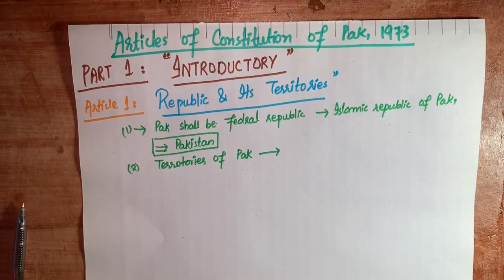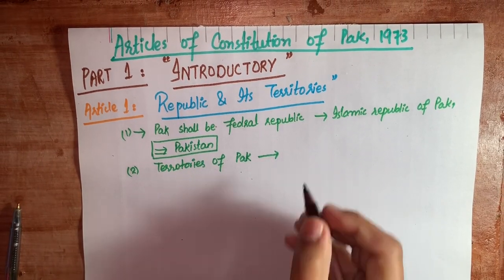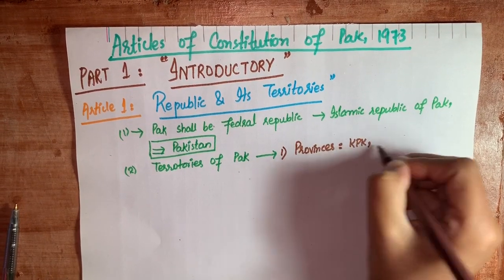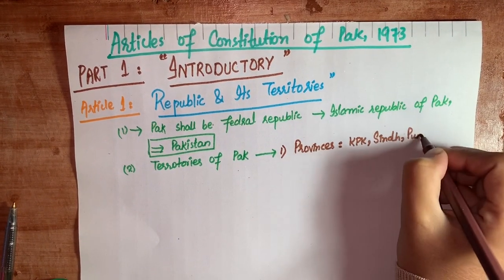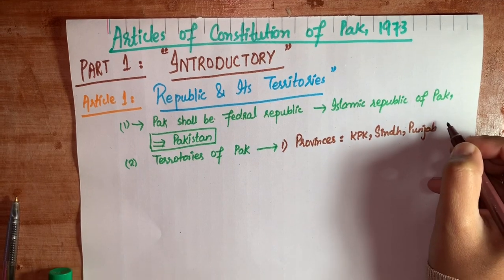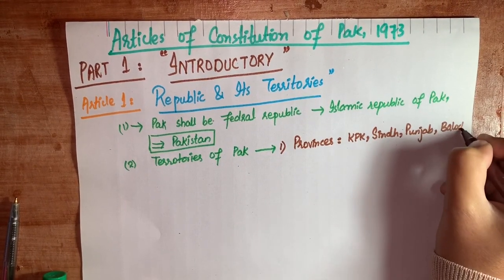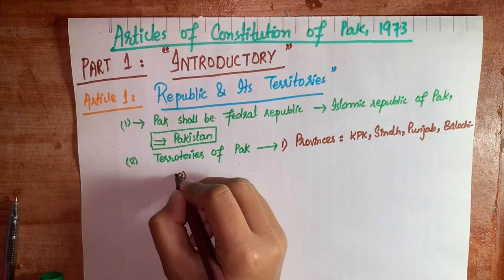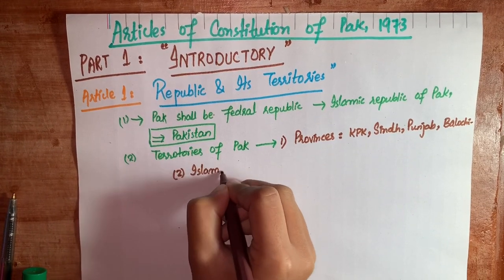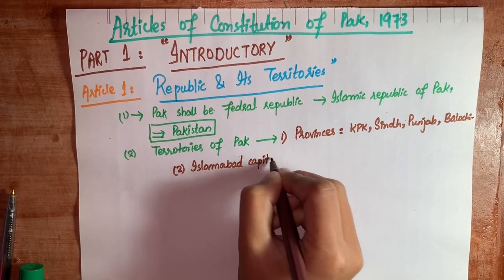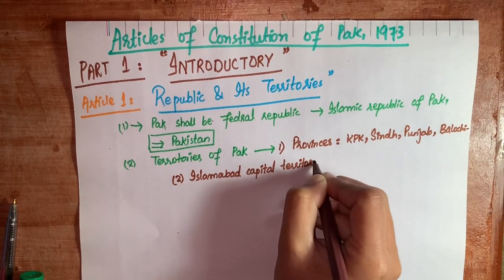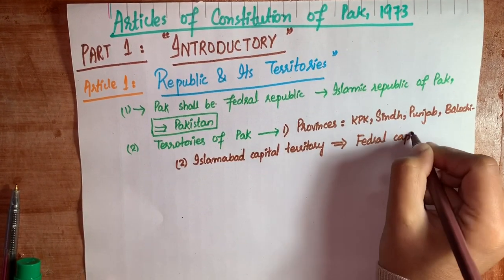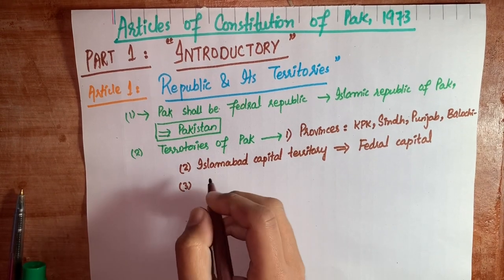Clause 2 kehta hai keh the territories of Pakistan shall comprise: Part A — the provinces of Khyber Pakhtunkhwa, Sindh, Punjab, and Balochistan — yeh chaar suube hain. Part B — the Islamabad Capital Territory, hereinafter referred to as the federal capital.